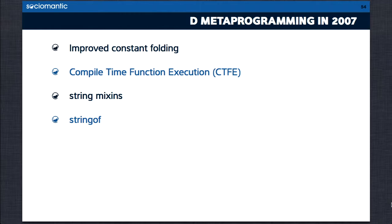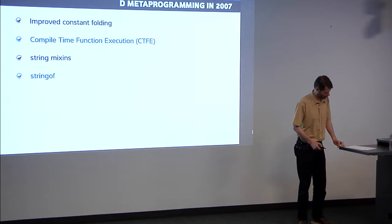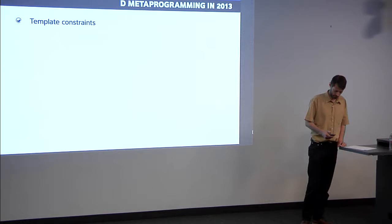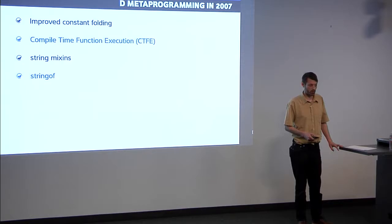That was the state of the language at the first D conference: a host of awesome new features, all added very quickly, and most of them didn't work. That feature list was frozen and called D1. Eighteen months after that, Sociomantic was founded, and all our code is written against the language as it was defined in 2007.